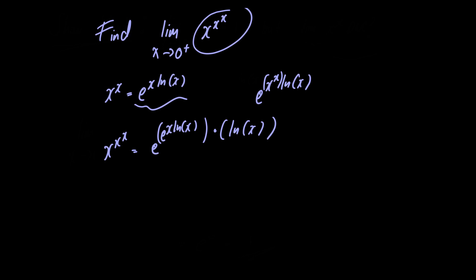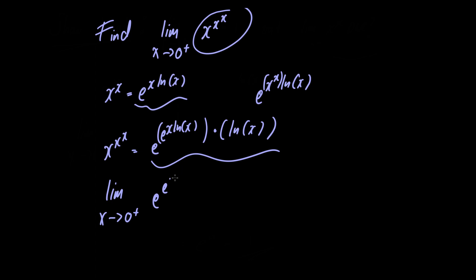So let's go ahead and rewrite our limit using what we have for x raised to x raised to x. We have the limit as x approaches zero from the right of e raised to e raised to the natural logarithm of x multiplied by x, multiplied by the natural logarithm of x.